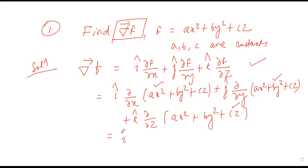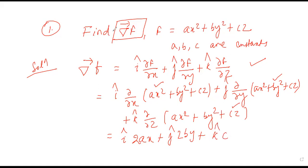So we get: î(2ax) + ĵ(2by) + k̂(c). This is the gradient ∇f. This simple example shows how to apply the del operator to any scalar function.